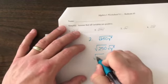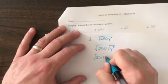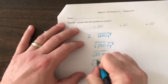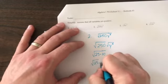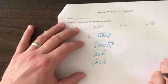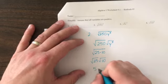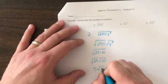The square root of 25 times 10, or the square root of 25 times the square root of 10. The square root of 25 is 5, so I've got 5 root 10.